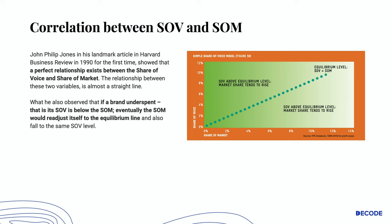There is a lot of research which has happened over the years that explains the importance of ESOF. John Philip Jones, in his landmark article in the Harvard Business Review in 1990, for the first time showed that a perfect relationship exists between share of voice and share of market — the relationship between these two variables is almost a straight line. He also observed that if a brand underspends, that is, the share of voice is below the share of market, eventually the share of market would readjust itself to the equilibrium line and fall to the same share of voice level.